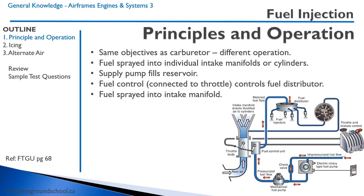The fuel is then sprayed directly into the intake manifold. If we see here on the right-hand side, fuel comes in from the fuel tanks. There is both a mechanical fuel pump as well as an electric fuel pump as an emergency backup. This puts pressurized fuel into the fuel control unit, and then there is a throttle body controlling the amount of air going to the intake manifold. This throttle is also controlling the amount of fuel that goes to the fuel distributor right here and into the fuel injectors into each individual cylinder.